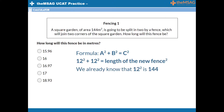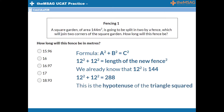We already know that 12 squared is 144. 144 plus 144 makes 288. Remember that this is the hypotenuse of the triangle squared. Use the calculator to find the square root of this, which is your final answer. You'll be pleased to know that the UCAT calculator has a square root button. When you plug in the numbers, you should get 16.97, meaning that option C is correct.